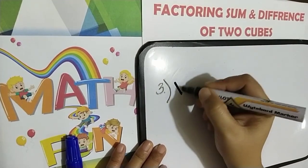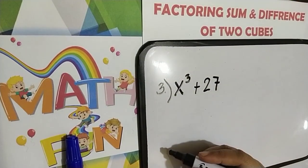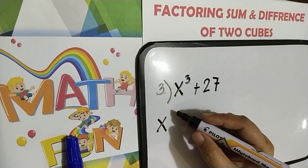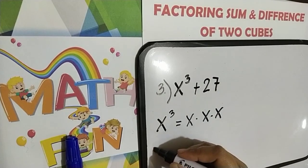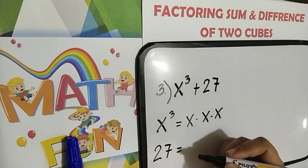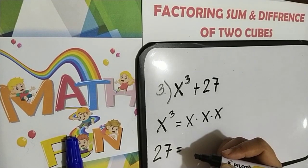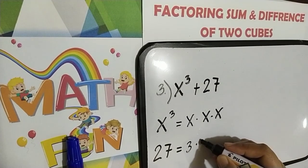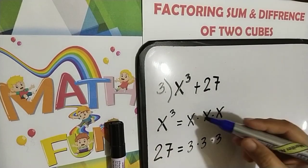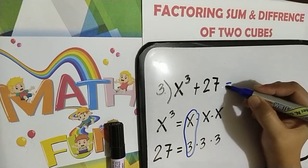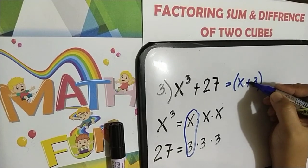For example number three: x cubed plus 27. Let's find again the factors of our first term. x cubed should have three equal factors — x times x times x. How about for 27? It should be three equal factors. What are the factors of 27? That is 3 times 3 times 3. Then let's use the first pair, which is x and 3. Since our operation is plus, our first factor will become plus.